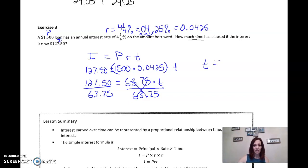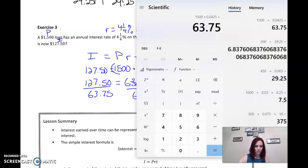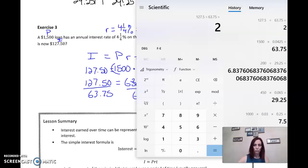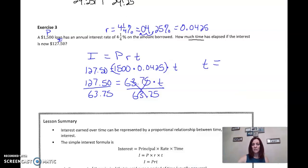And then I just type this into a calculator. 127.50 divided by 63.75. We get two. So T equals two. How much time has elapsed? Elapsed. And it's an annual interest rate. So it's years. Two years.